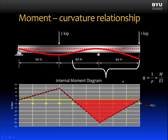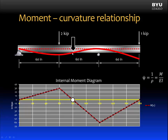Thus, we see that there is a relationship between what we'll call curvature — this is the Greek letter psi — which is equal to 1 over the radius of curvature, and that equals the internal moment divided by EI. E is the modulus of elasticity, I is the moment of inertia of the cross section, and together E and I are called the flexural rigidity. Where the moment is zero, that will be an inflection point in our deformed shape.